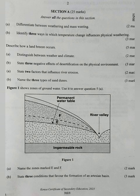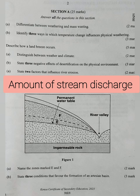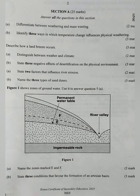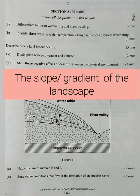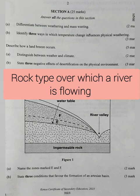Question 4A: state two factors that influence river erosion. Number one is the amount of stream discharge — it has to be large for a river to erode. Number two, the composition or size of sediment or the load the river is carrying; the larger the load, the higher the erosion. The slope or gradient of the landscape should be steep, and the rock type over which a river is flowing should be soft for erosion to occur.